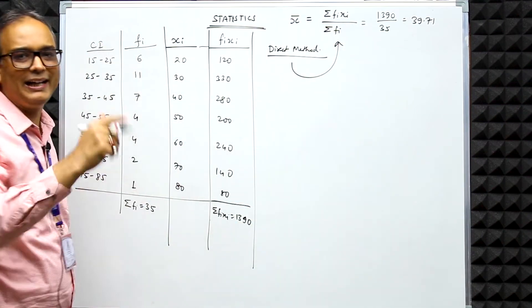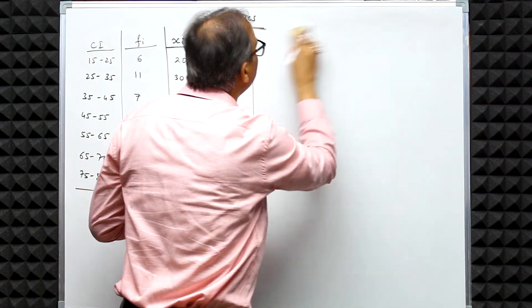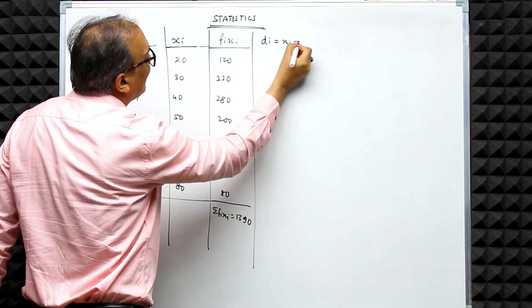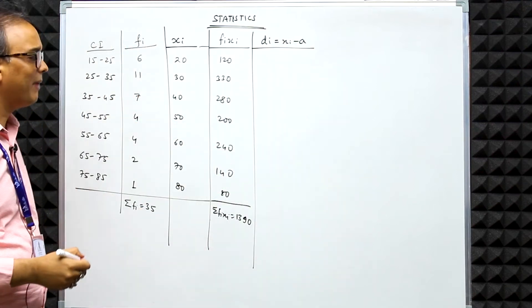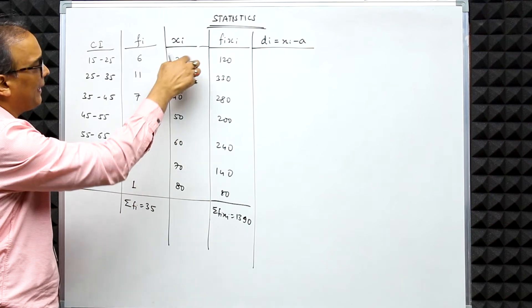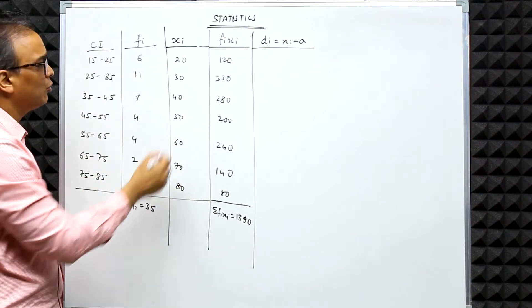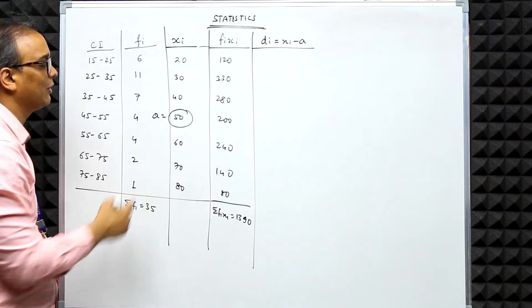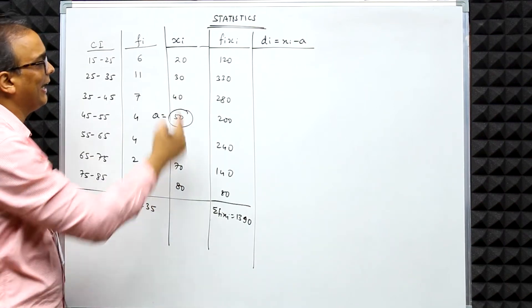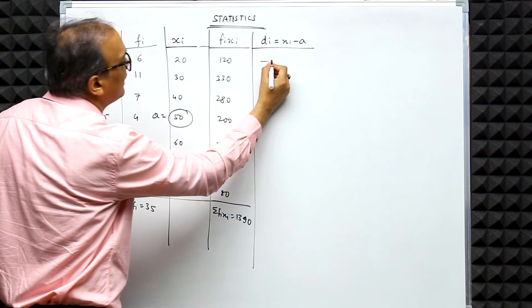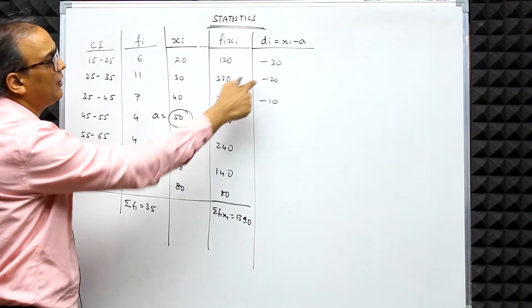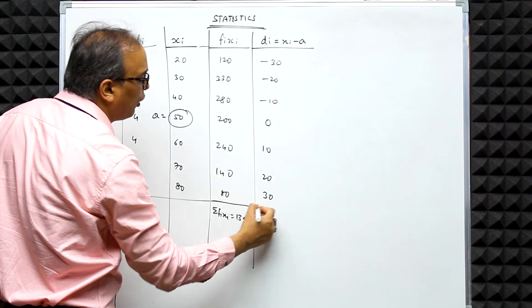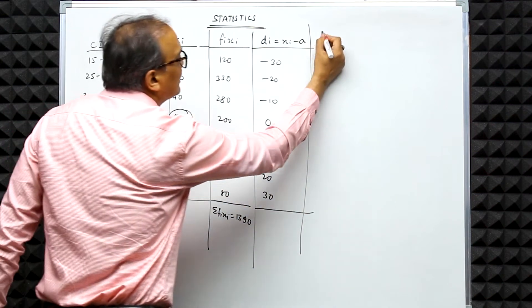The second method is the Assumed Mean Method. Here we calculate the deviation di = xi − a, where 'a' is the assumed mean. To find the assumed mean, we pick the midpoint class mark from the 7 class marks — that is the 4th value, which is 50. So assumed mean a = 50. Deviations: 20−50 = −30, 30−50 = −20, 40−50 = −10, 50−50 = 0, then 10, 20, and 30.